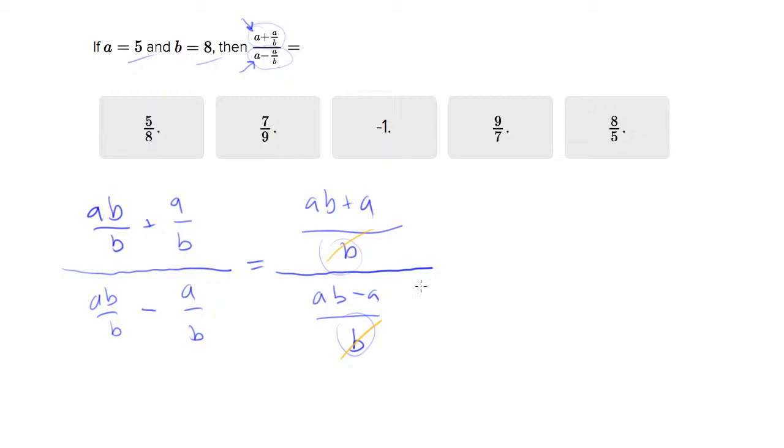Because what it means is we actually just got rid of our double-decker fraction, and now what we have is ab plus a over ab minus a.